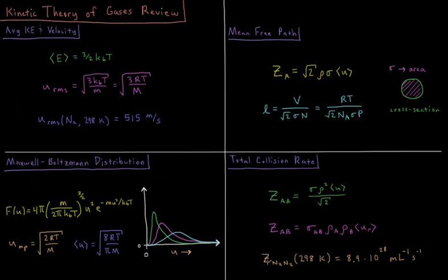For an example, the average number of collisions that occur between nitrogen particles in a sample of gas at 298 Kelvin is 8.9 times 10 to the 28 per milliliter per second. So every cubic centimeter of gas every second has 10 to the 28 collisions, which is an enormous number of collisions.